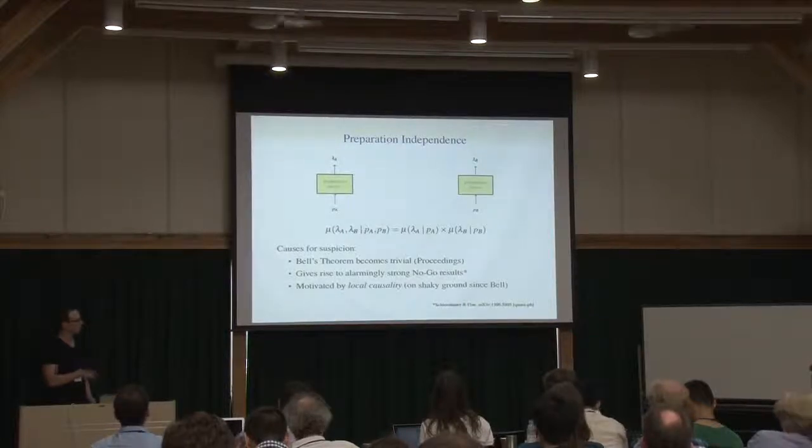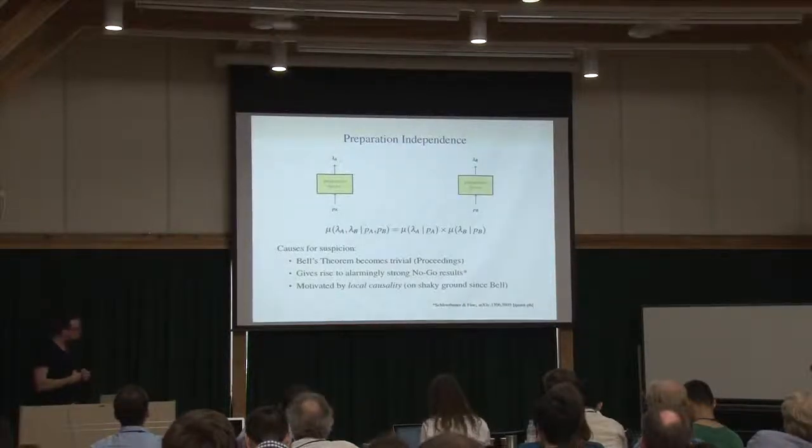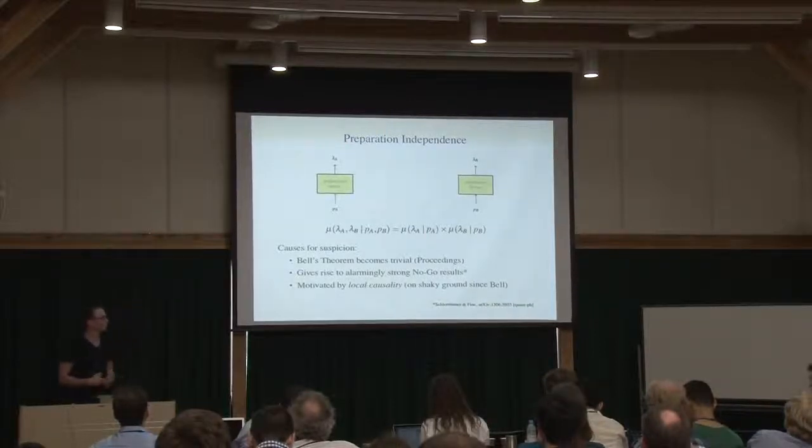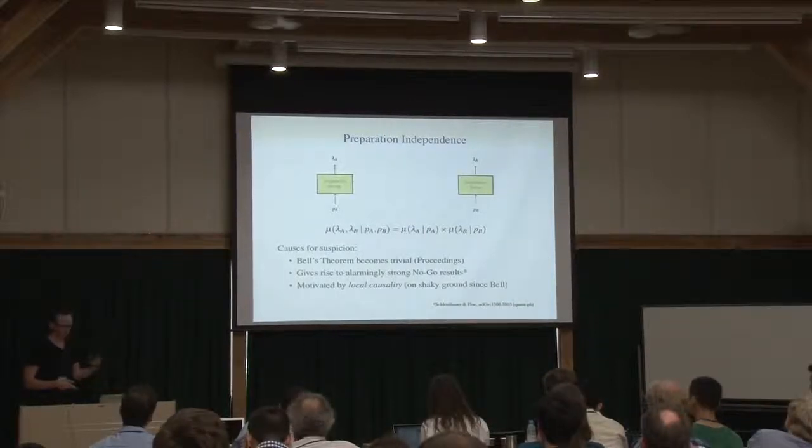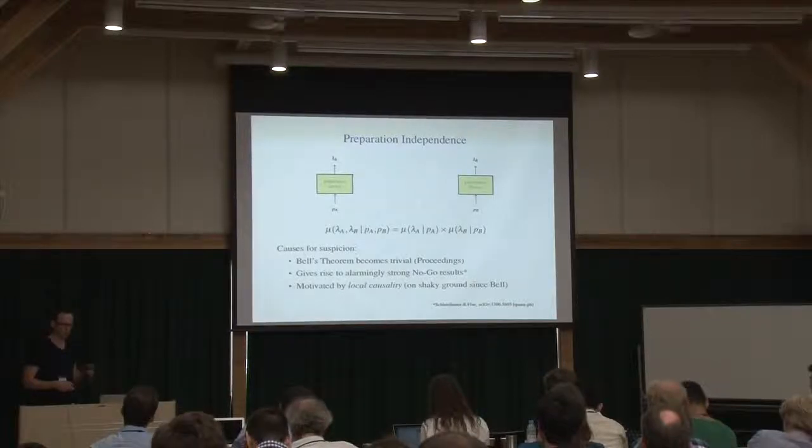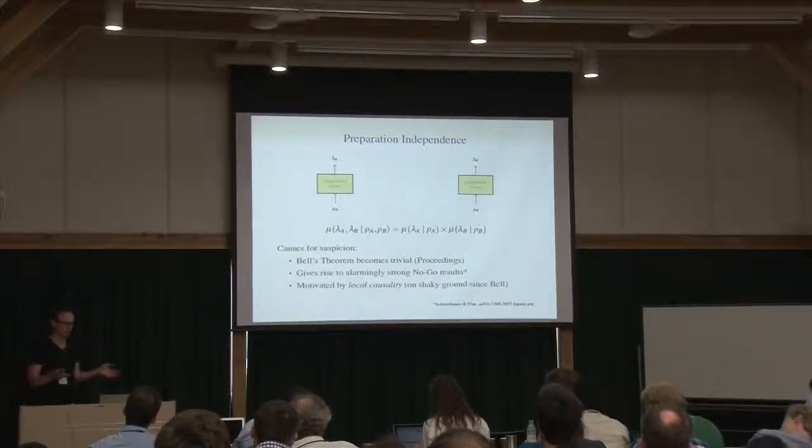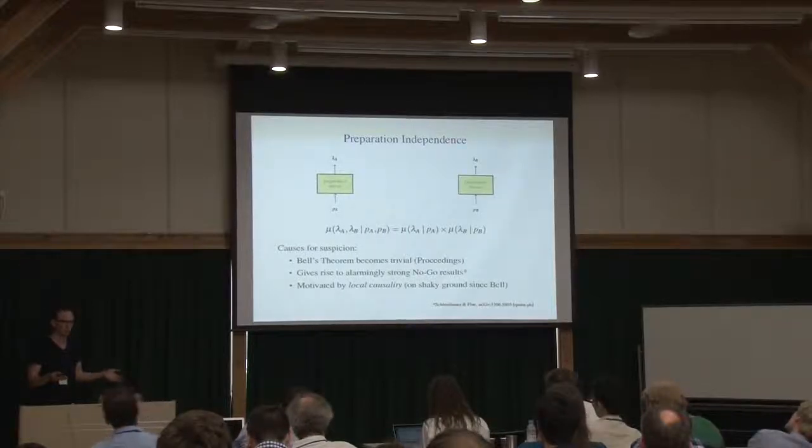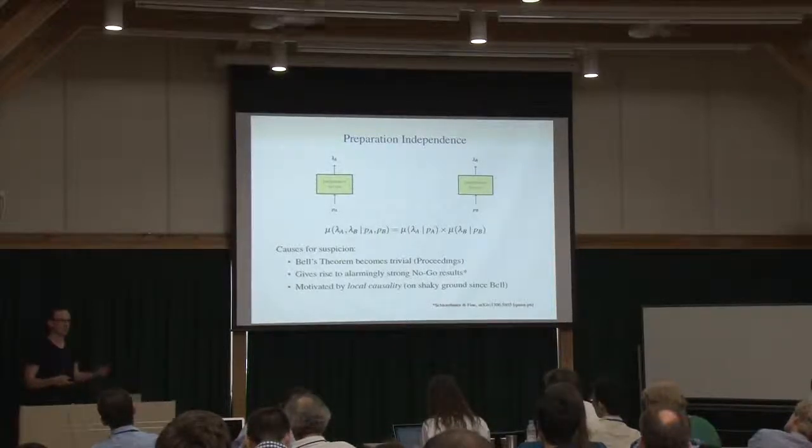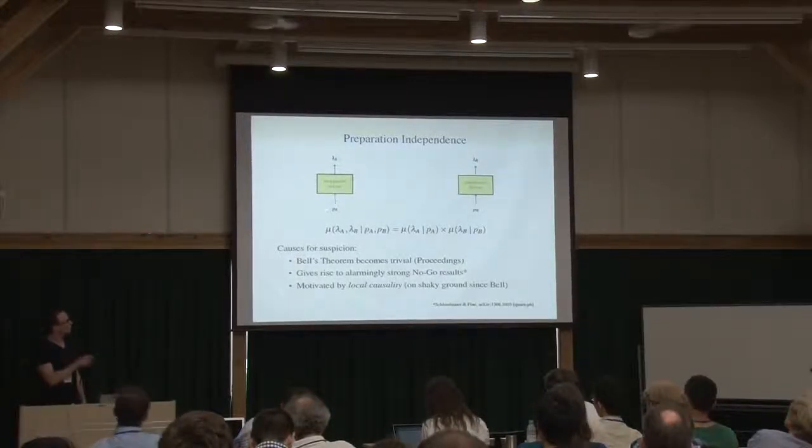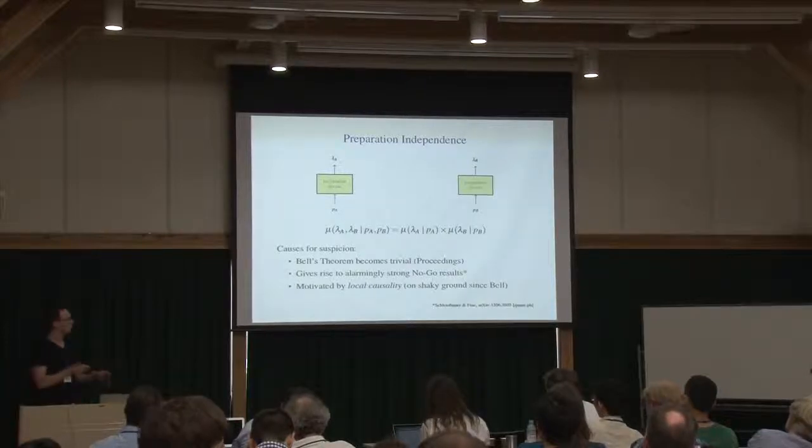Another point is that preparation independence can be used to give rise to other alarmingly strong no-go results. One of them is this one, which is Schlosshauer's result. So unfortunately I can't give a kind of neat description of this, but it places some restrictions on any ontological theories you might want to build that appear to be unfeasibly strong.